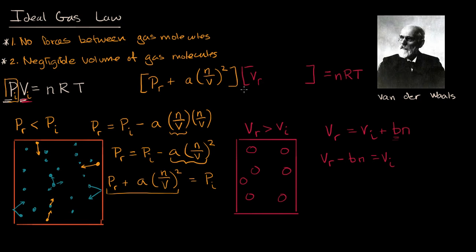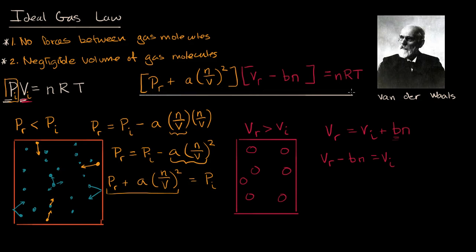We can substitute that back in: the ideal volume is V_real minus B·n. And this is the van der Waals equation. The reason for going through this conceptual derivation is that the equation looks daunting at first, until you realize the first term is just the ideal pressure and the second term is just the ideal volume — adjusted from the real values to account for attractive forces between particles and the actual volume of the particles.